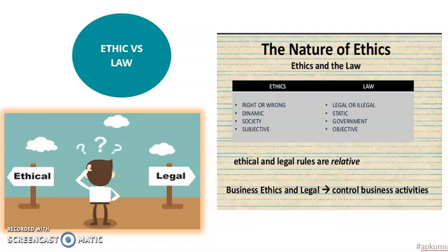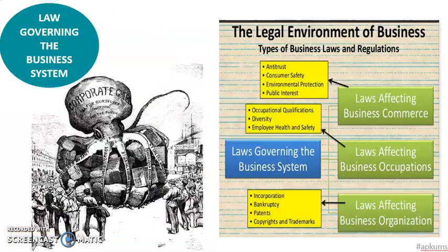Next, we will look at how the legal environment — the law — influences our business. The law will govern the business systems. For example, law affects business commerce in terms of customer and consumer safety; we have to ensure that the product is safe to be consumed. Also, environment protection — protecting the environment against pollution or purposely polluting the environment.